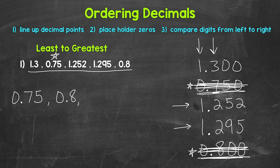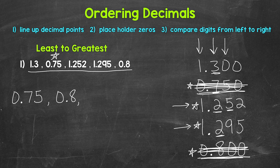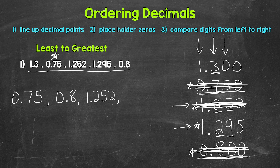Let's continue on. Looking at the ones place, we have all ones now, so we can move over to the tenths place. We have three, two, and two. Those twos are less than three, so we have this narrowed down to these right here. Both have a two in the tenths, so we need to move over to the hundredths place and compare those digits. We have a five and a nine — five is less than nine, so that comes next: one and two hundred fifty-two thousandths. Another way to think about that: two hundred fifty-two thousandths compared to two hundred ninety-five thousandths — two hundred fifty-two thousandths is less.